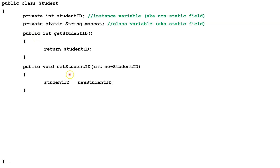Next, we'll create a Setter method. This one is going to be setStudentID. We have to pass it a value, and we're going to use that value to change the value of the field studentID. So I've called mine newStudentID — you can call it whatever you want. This parameter has to be the same data type as the field. It's a void method because we're not returning anything. And it's very simple — we're just setting the field studentID equal to our parameter newStudentID.